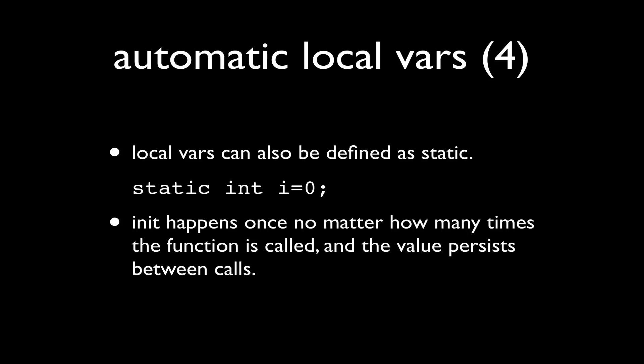Local variables in a function can also be defined as static as I show here. Static int i equals zero. And what this does is you can think of this as sort of pinning that variable down so that it actually persists between function calls.